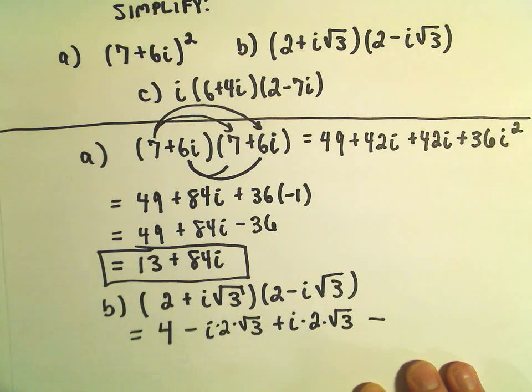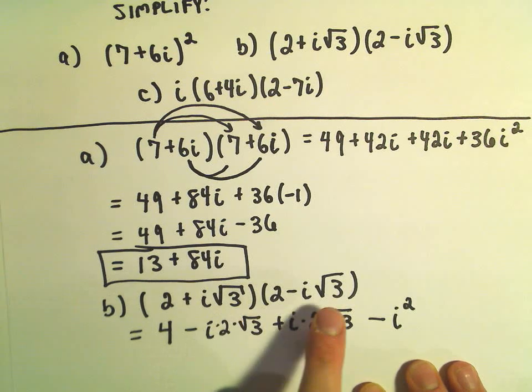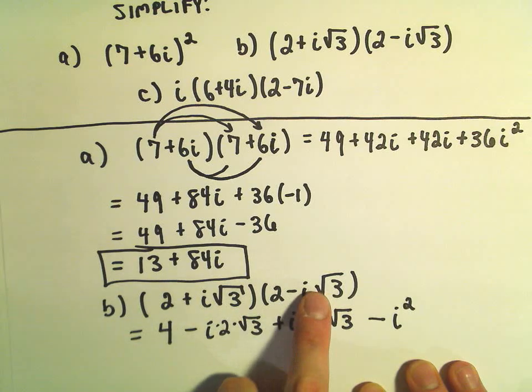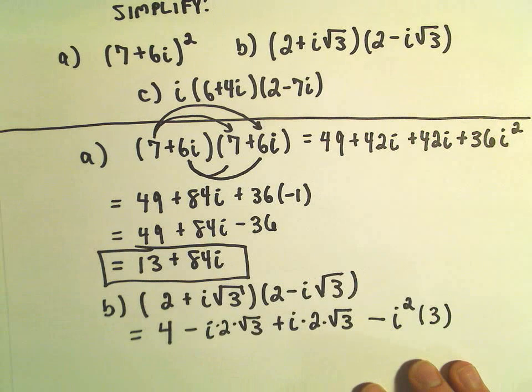We have i times i, which is i squared. And then we have square root of 3 times the square root of 3. But the square root of 3 times the square root of 3 is going to give us the square root of 9. Which again is simply equal to 3.